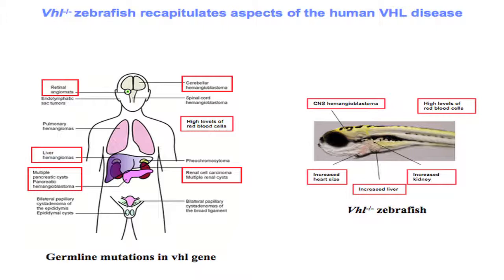This VHL-negative fish develops increased angiogenesis, erythrocytosis, increased size of the liver and kidney — though not frank kidney cancer — cardiomegaly, and edema. It has a short lifespan; the embryo dies at approximately 10 days due to all these physiologic changes. I put here a human cartoon because many of these features encountered in the fish are actually encountered in patients with VHL disease.